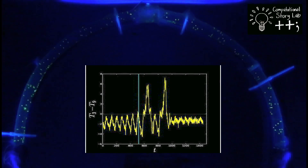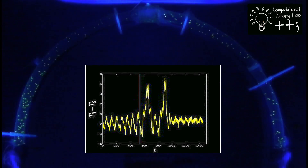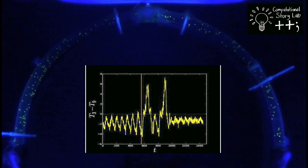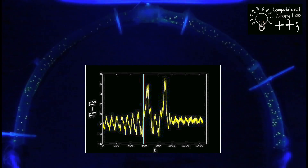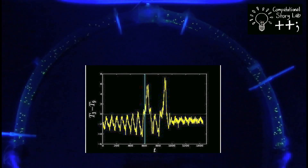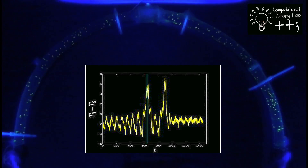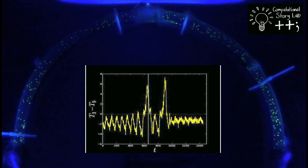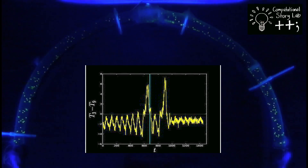When the temperature difference is large enough, stable convection gives way to deterministic non-periodic flow where a steady state is never reached and the fluid switches direction in an unpredictable pattern. Shown in yellow is the fluid temperature difference between 3 and 9 o'clock, with negative values showing that the fluid is rotating clockwise.